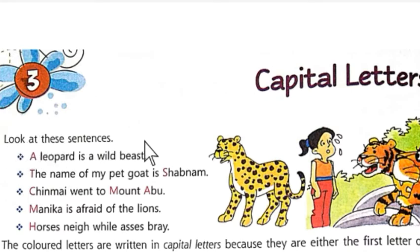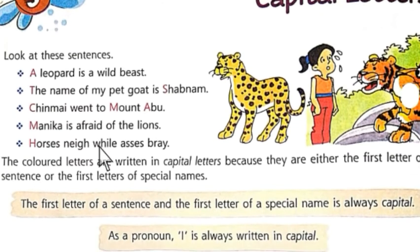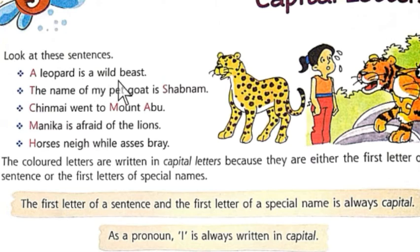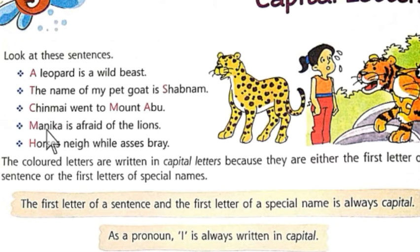Look at the sentences. First sentence: 'A leopard is a wild beast.' The name of my pet, 'Chinmai went to Mount Abu,' 'Manika is afraid of the lions,' 'Horses neigh while horses bray.' These are our example sentences.